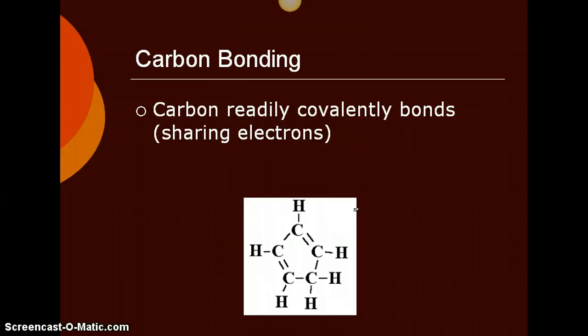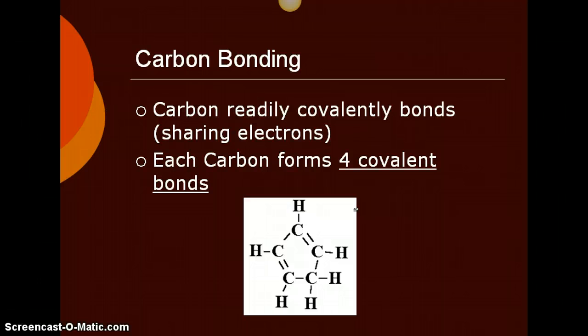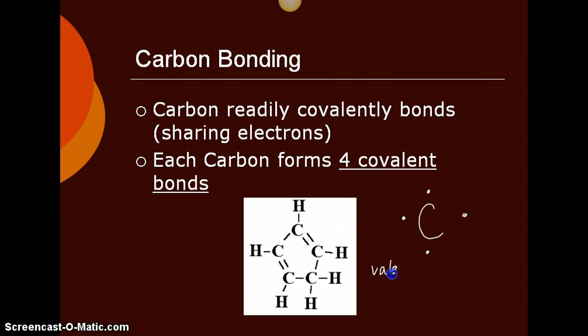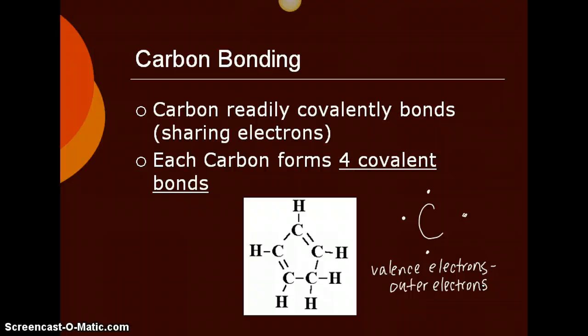Carbon will readily covalently bond. The reason behind this is that carbon, when you look at carbon's valence electrons, which are the outermost electrons, some of you have had physical science already and you'll recognize that term. Valence electrons are just the outer electrons, shown here by these dots. The Lewis dot structure, that's what this is called, will show that we have four outer electrons. Every atom wants to be at eight outer electrons. So there's an open spot here, an open spot here, here, and here. Those open spots are places that carbon can share electrons.